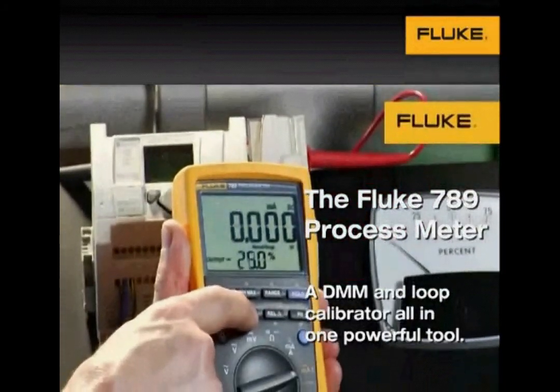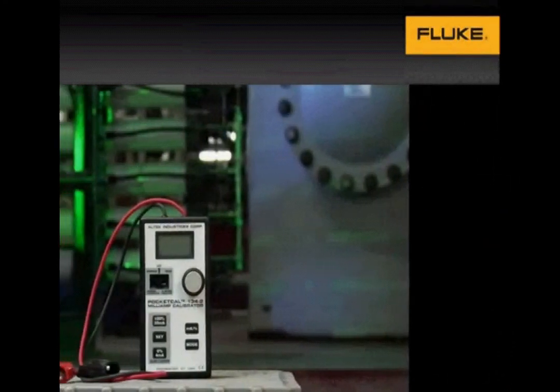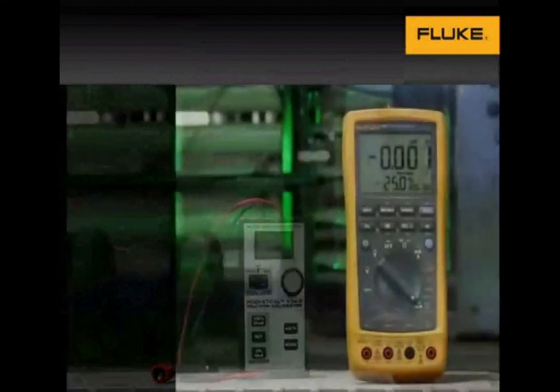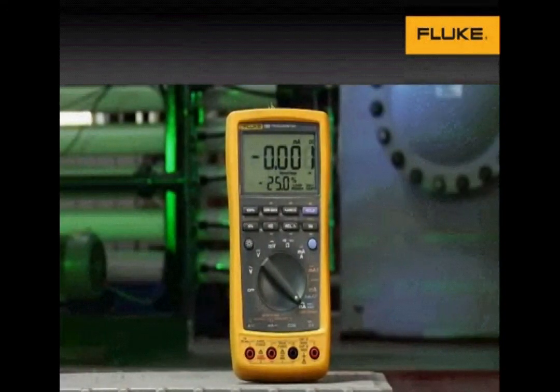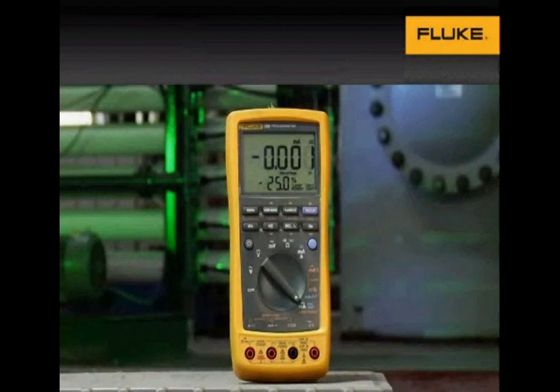The Fluke 789 process meter is a combination of a 4 to 20 milliamp loop calibrator and a CAT IV 600 volt safety-rated DMM with an oversized display.